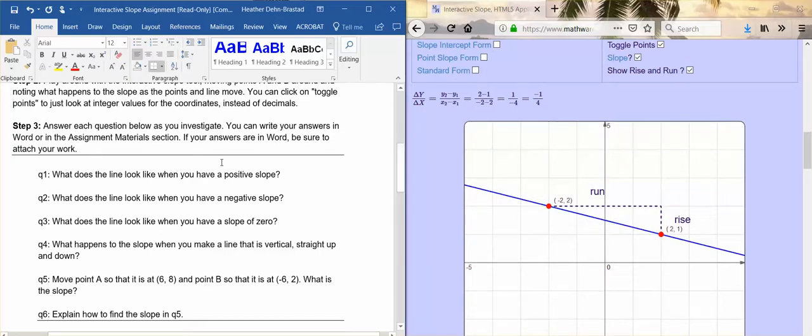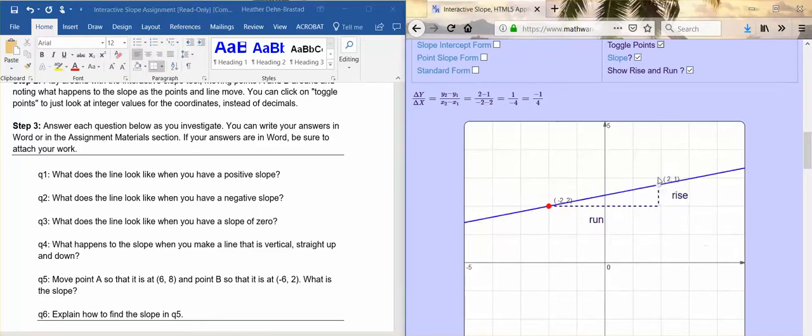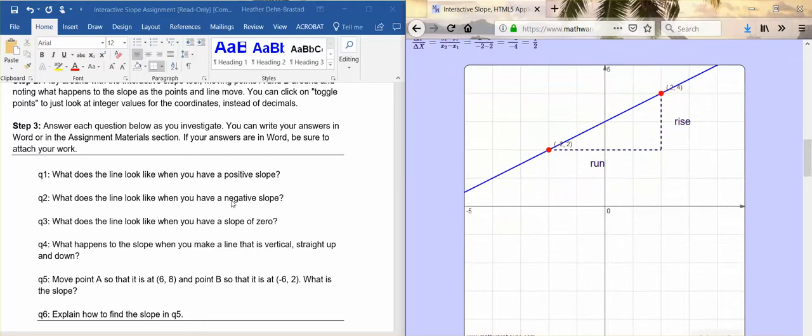These are in your own words, these are not right or wrong answers for the most cases, just what your observations are. The first question is what does the line look like when you have a positive slope. This is a negative slope, so maybe I'd want to change it first so that it is a positive slope so that I can describe it. You might want to talk about from left to right the line is going which direction, and then same thing for a negative slope.